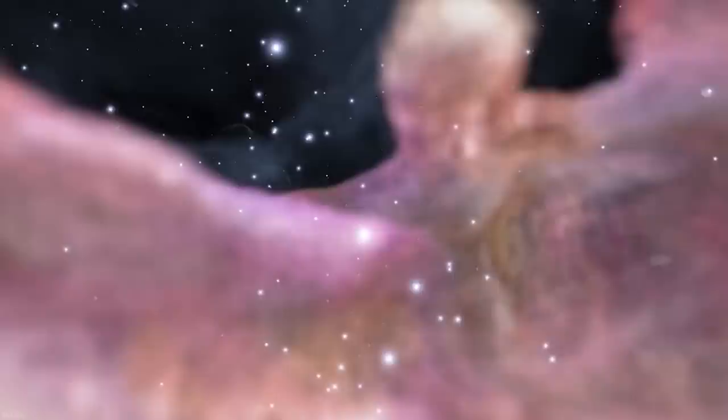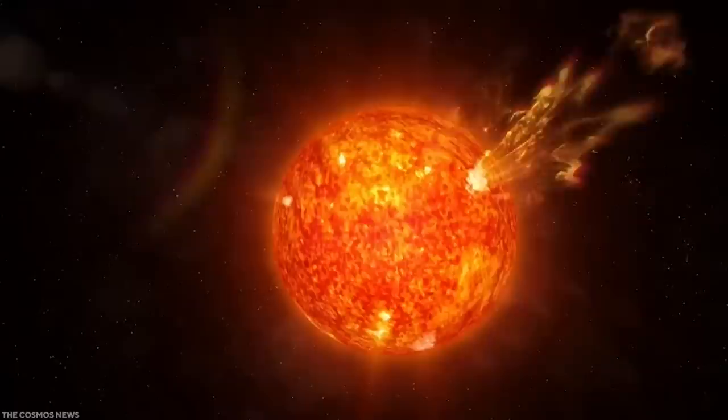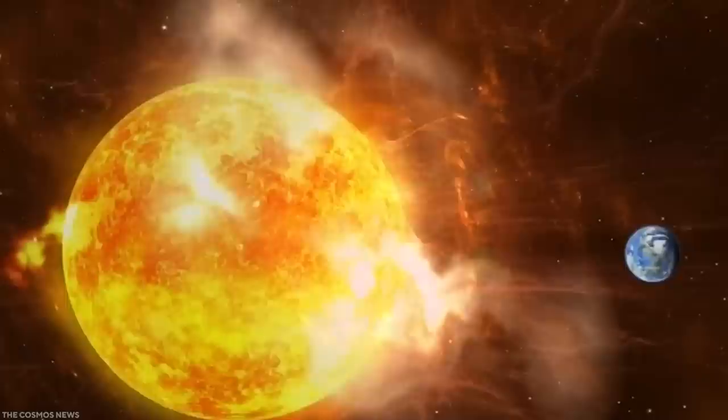The red supergiant Betelgeuse, also known as Alpha Orionis, is an outlier among the blue supergiants situated on Orion's shoulder. It is the biggest star in the constellation and is around 500 light-years from Earth, with a radius 1,000 times that of the Sun.